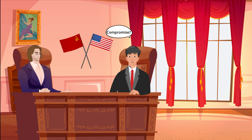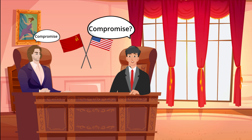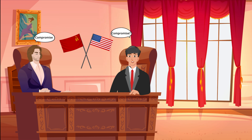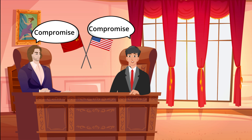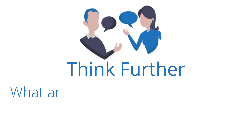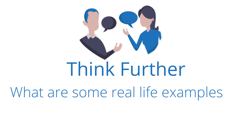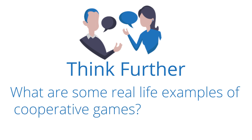With a loss situation as big as mutually assured destruction, U.S. and Soviet leaders were willing to compromise once they actually talked to each other. Whether it's in political science, biology, computer science, or economics, game theories are used to model human behavior and help determine what's the smartest or the fairest way to approach a problem. Now it's your time to think further — what are some real-life examples of cooperative games?